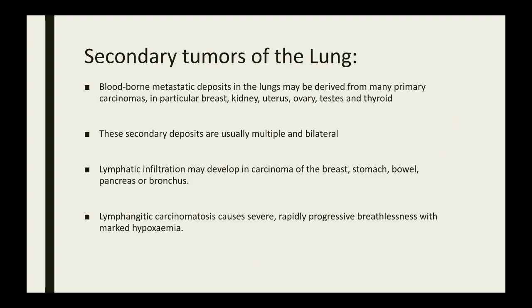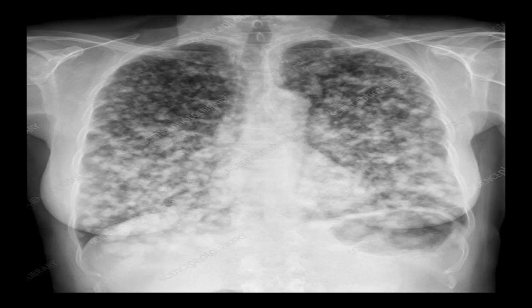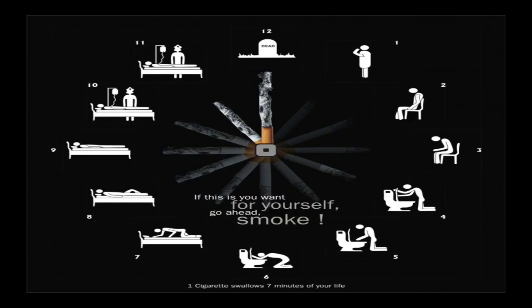Coming to secondary tumors of the lung, secondaries usually reach the lung through the blood-borne route, particularly from the breast, kidney, uterus, ovary, testis, and thyroid. These secondary deposits are usually multiple and bilateral. Metastasis from other organs can also involve the lymph nodes, leading to lymphangitis carcinomatosis, which causes rapidly progressive breathlessness with marked hypoxemia. This chest X-ray shows multiple secondaries. Please do quit smoking — it is very harmful. Thank you.